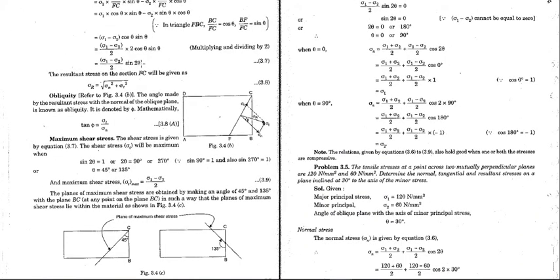Dividing by the area and applying sign conventions, the normal stress is σ_n = (σ₁ + σ₂)/2 + (σ₁ − σ₂)/2 · cos 2θ, and the tangential stress is σ_t = (σ₁ − σ₂)/2 · sin 2θ. The resultant stress is σ_r = √(σ_n² + σ_t²), and the angle φ between the resultant and the normal satisfies tan φ = σ_t / σ_n.